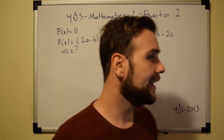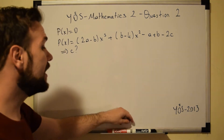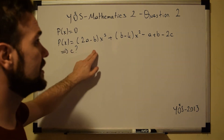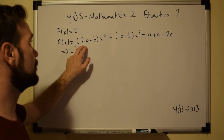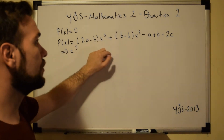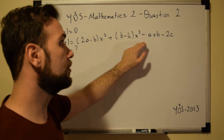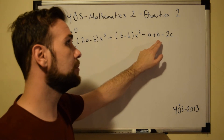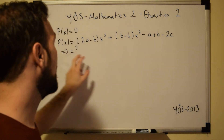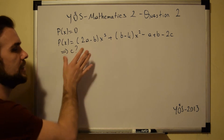Welcome to the second question. In this question we have P(x) equal to 0, and P(x) stands for the expression: 2A minus B times x to the power of 3, plus B minus 4 times x to the power of 2, minus A plus B minus 2C. We are asked to find the value of C.